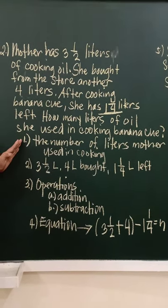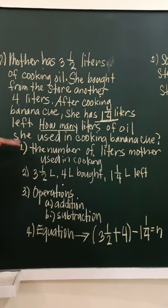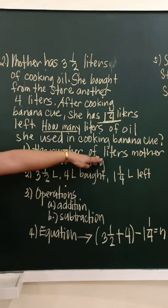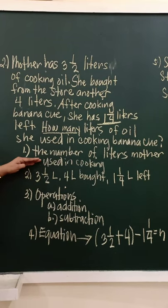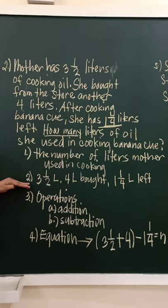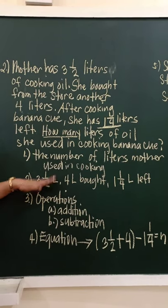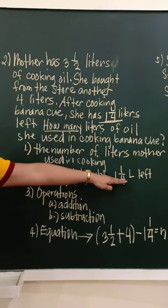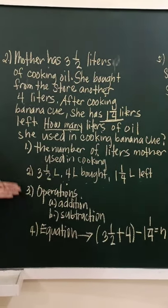For what is asked: the problem is asking the number of liters of oil mother used in cooking. For the given facts: three and one-half liters, that's what she had initially. Then, four liters, that's what she bought from the store. Then, one and one-fourth liters, that's what's left after cooking.